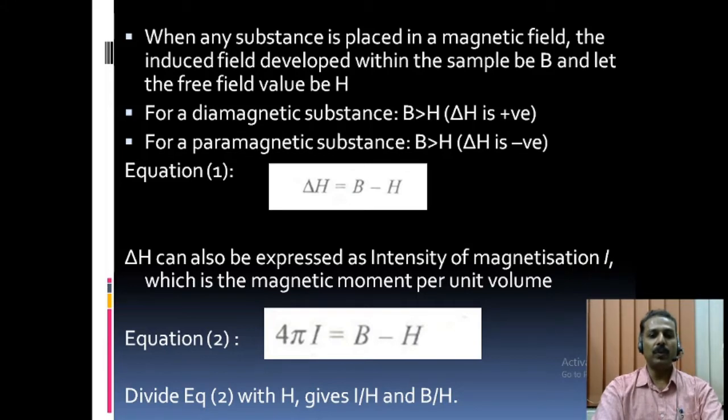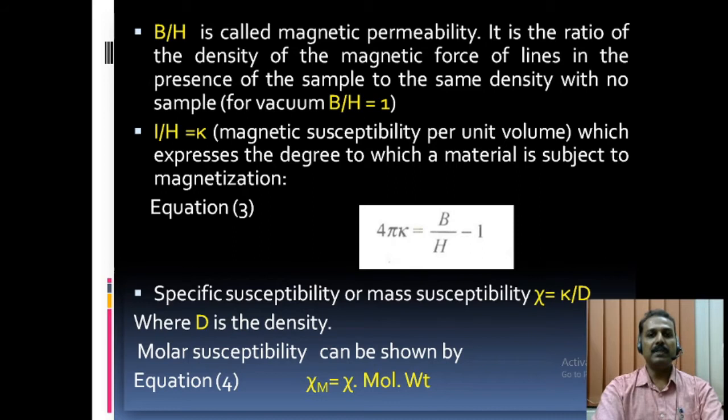Divide equation 2 with H gives I by H and B by H. B by H is called magnetic permeability. It is the ratio of the density of magnetic force lines in the presence of the sample to the same density with no sample. That is for vacuum, B by H is equal to 1. I by H is kappa, that is magnetic susceptibility per unit volume, which expresses the degree to which a material is subject to magnetization.